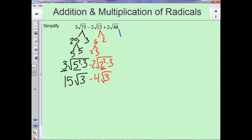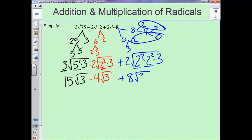And this last one, 48, 6 and 8, 2 and 4. So we'll have a 2 squared here, a 2 squared. So we'll have a 2 and another 2 that can come out, so we're left with 8 square root of 3.